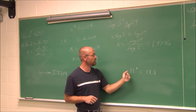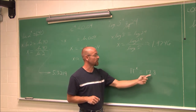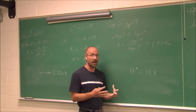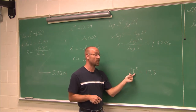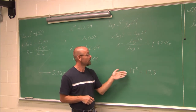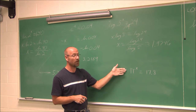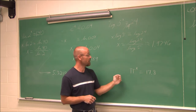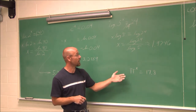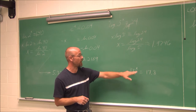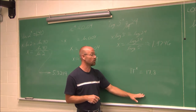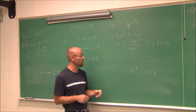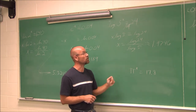Here we have π^x = 17.8. Pi is just an irrational number that should be a value on your calculator. Go ahead and try to solve this one for x. Make sure you check it — raise pi to the value you find. You can use a natural log or log base 10, whatever you choose.